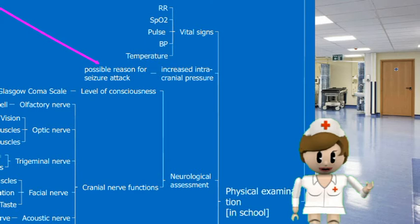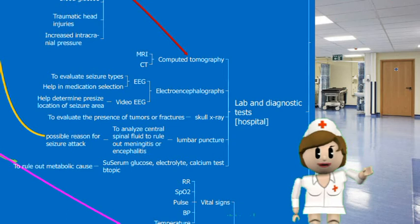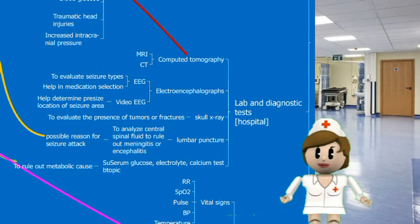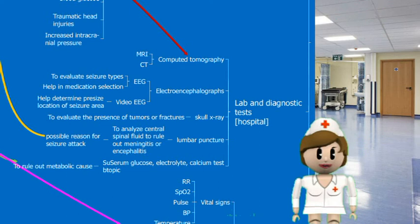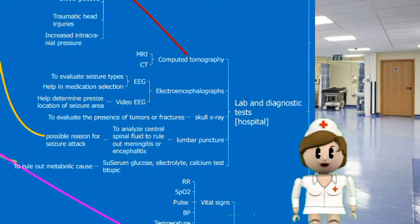When Jack is sent to hospital, we can perform lab and diagnostic tests. Skull X-ray can evaluate the presence of tumors or fractures. Lumbar puncture can rule out CNS infection causing seizure, such as encephalitis. MRI and CT scan can identify intracranial bleeds or tumors. Testing his serum nutrient levels can also reveal if nutrient deficiencies are contributing to seizure.